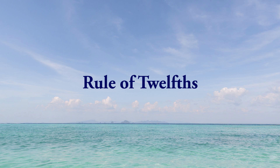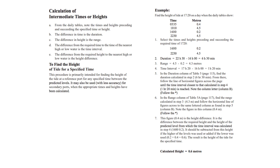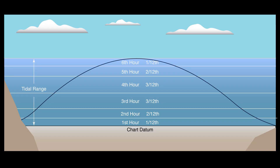Rule of Twelfths. Now I want to take a quick look at a rule of thumb to help you determine intermediate depths of tide, or depths in between tabulated high and low tide. As with all such rules of thumb, it is a rough estimate. If you desire specific numbers, there are tables that can be used. But for most cruisers, the Rule of Twelfths will work. Just be sure to be conservative.